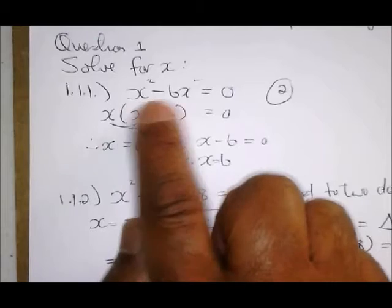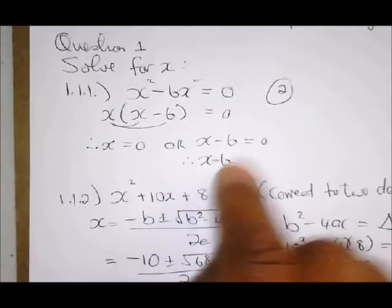And it's good practice to always test your answers. So you can substitute x equals 0 into the equation, and the left hand side is equal to the right hand side. Do the same with the 6. Check your answer to see do you get the correct. And that's how you can earn two marks.